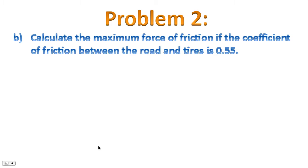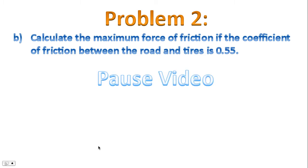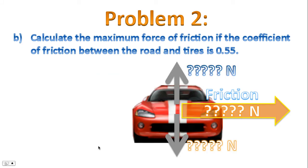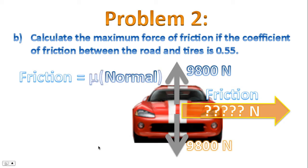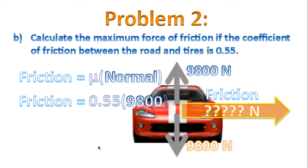Part B: calculate the maximum force of friction if the coefficient of friction between road and tires is 0.55. Recalling the diagram, the force of gravity is 9,800 newtons (9.8 times 1,000), which balances with the normal force. Friction is given by the formula coefficient times normal force, and working through the math we end up with 5,390 newtons.